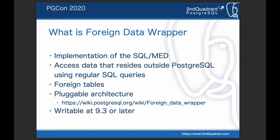There are actually some ways, including DB-Link, to access data outside a PostgreSQL server. But one of the biggest advantages of FDW is we can access that data using regular SQL queries through a special type of table called a foreign table. The foreign table looks the same as normal tables, but they actually don't have any data in the local node. If you access foreign data, the PostgreSQL server accesses the foreign server and returns it to the client, so from the client's point of view, that data looks like it exists on the local node.